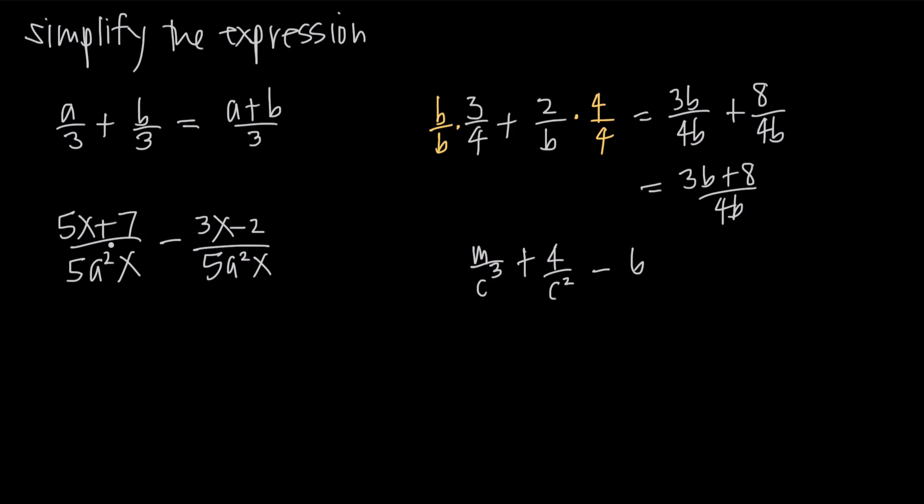Let's look at this example. We have (5x+7)/(5a²x) minus (3x-2)/(5a²x). Again, we're looking for a common denominator and luckily we already have one. The denominator of both fractions is 5a²x, so we can go ahead and combine them directly. Here's where we have to be really careful. This is the first problem where we've had subtraction. When we combine the fractions, we know the denominator is going to be 5a²x.